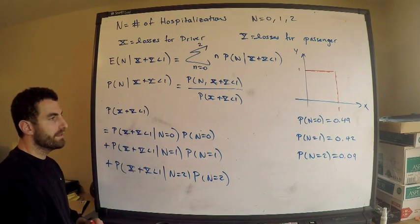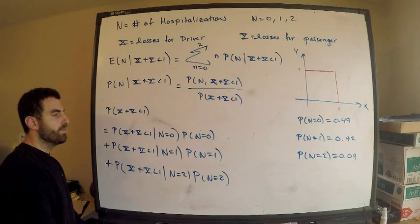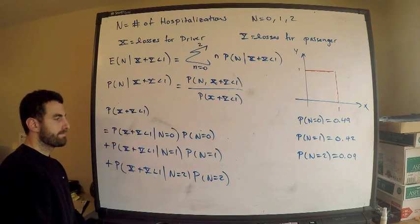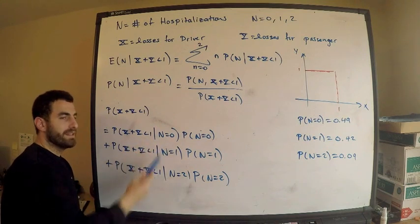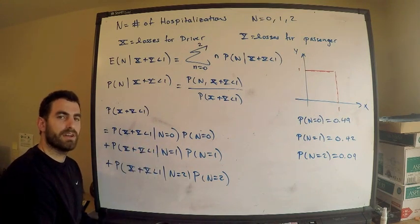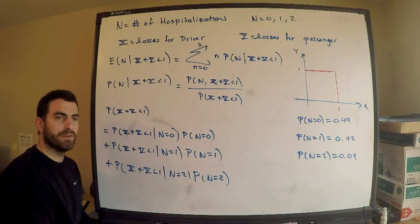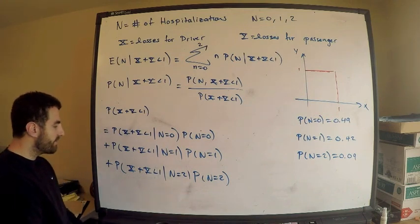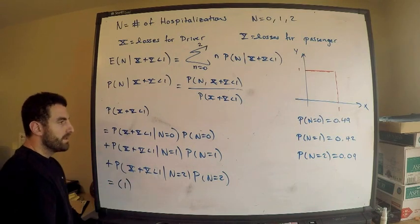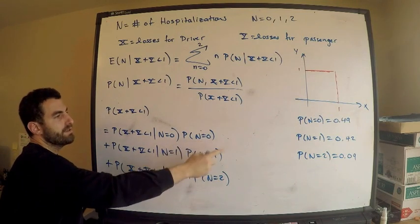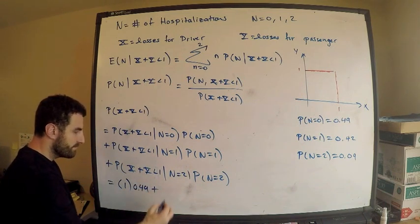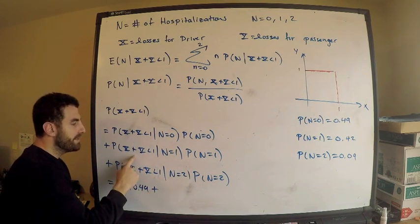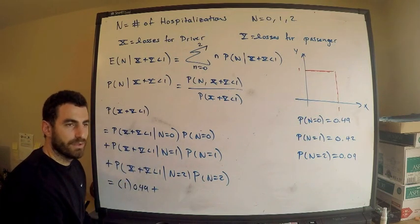Think about this for a second. What is the probability of total loss less than 1, given no hospitalizations? If there are no hospitalizations, then the loss is 0 — no one gets hurt, there's no loss whatsoever — so that equals 1. Probability N equals 0 is 0.49. Plus, what's the probability that total loss is less than 1, given N equals 1? If N is 1, only one person is hospitalized.